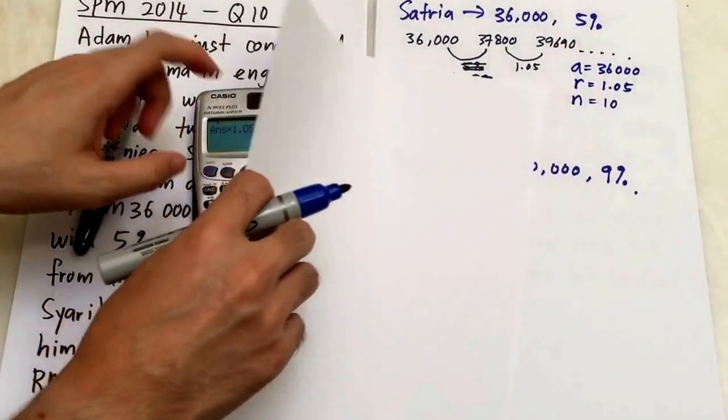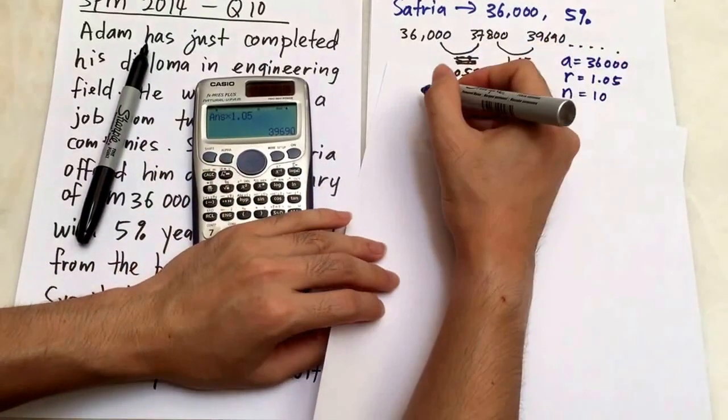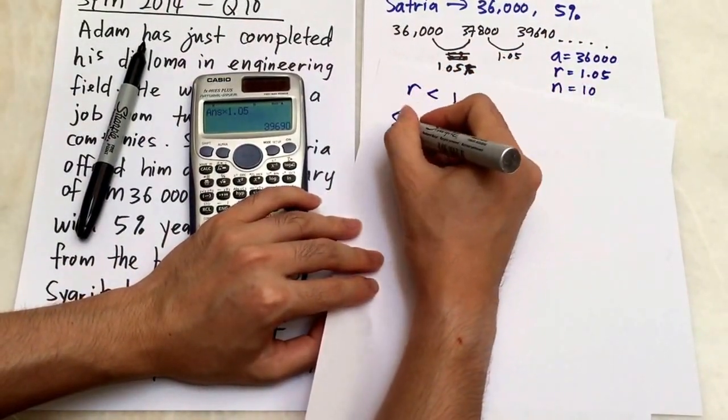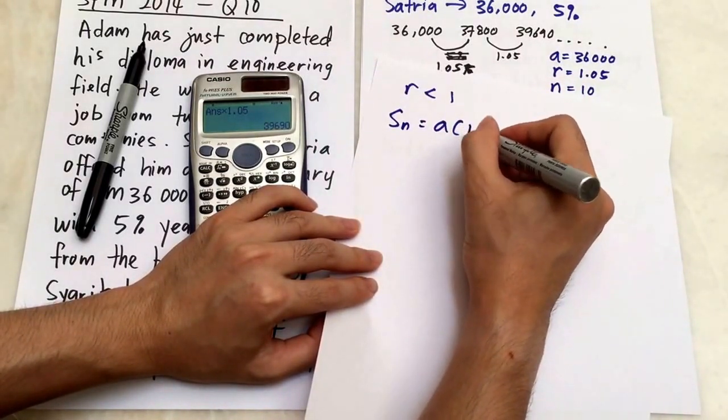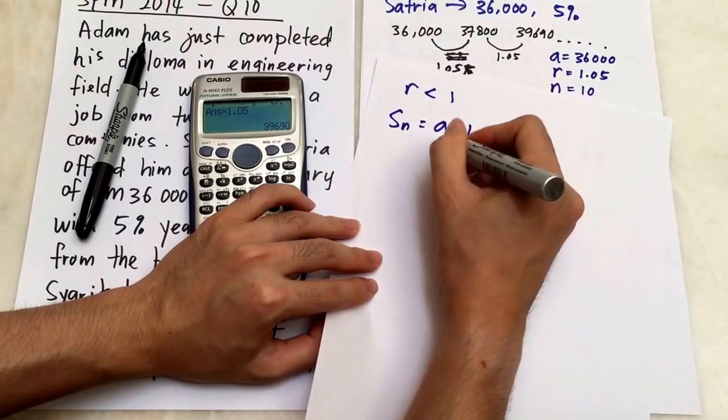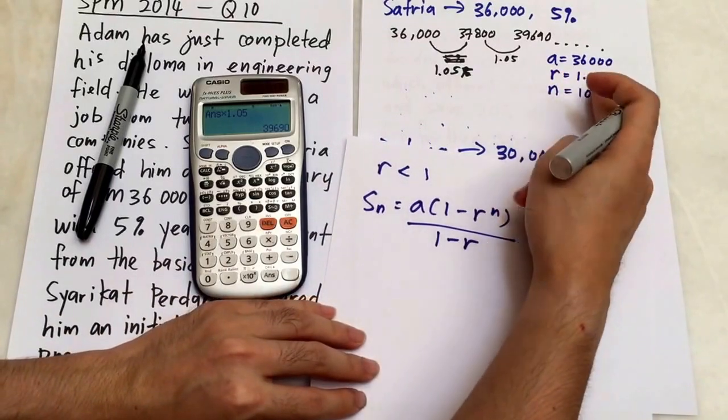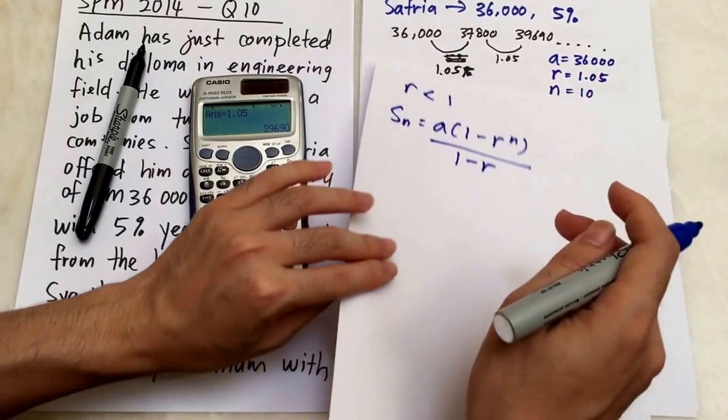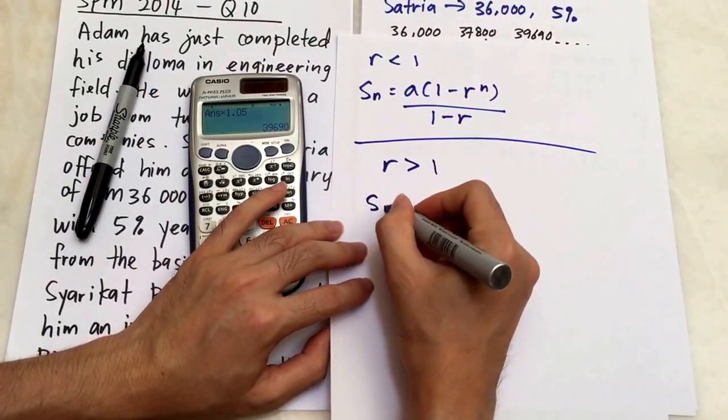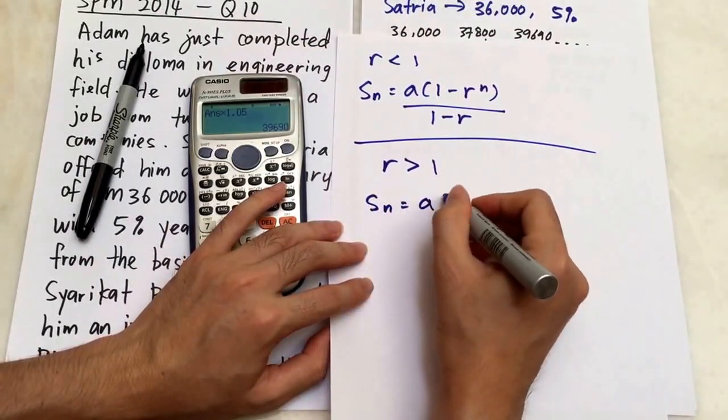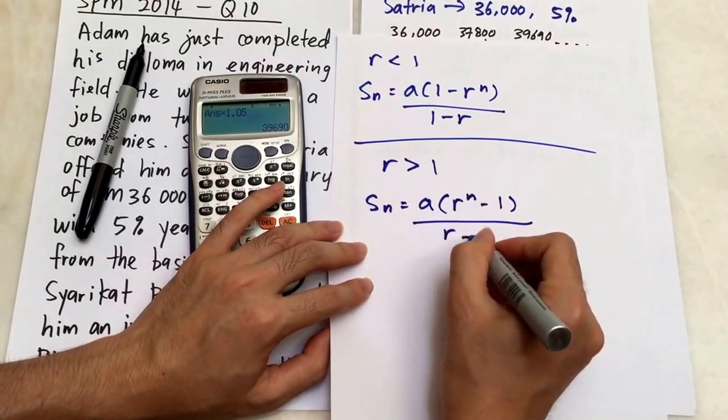The first formula: if r is less than 1, your formula for Sn will be a × (1 - r^n) / (1 - r). But obviously 1.05 is bigger than 1. If r is bigger than 1, your formula will be Sn = a × (r^n - 1) / (r - 1).